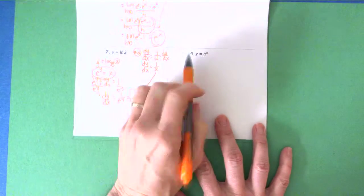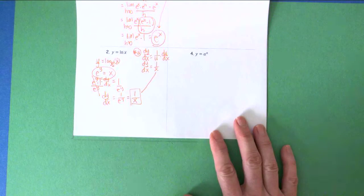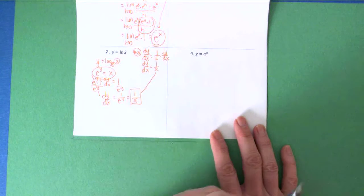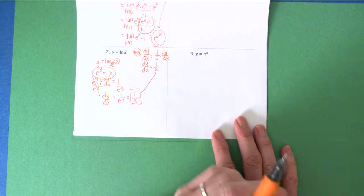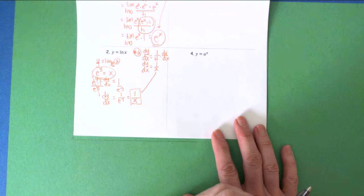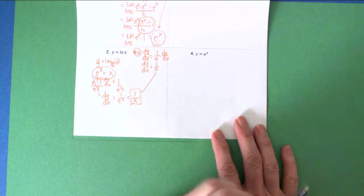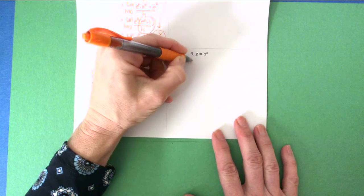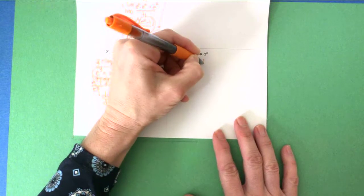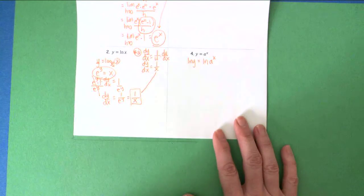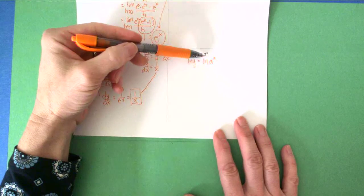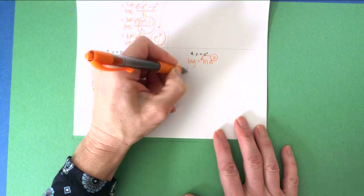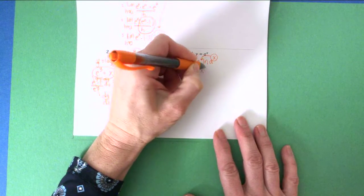I'm going to move to number four next: the derivative of y equals a^x, where a is a constant. This is very much like example nine from yesterday, that special case we did. In order to settle this proof, we're going to natural log both sides. So I take the natural log of y and set it equal to the natural log of a^x. Using the logarithmic rule from yesterday, that exponent comes down to the front, giving me: natural log of y equals x times the natural log of a.